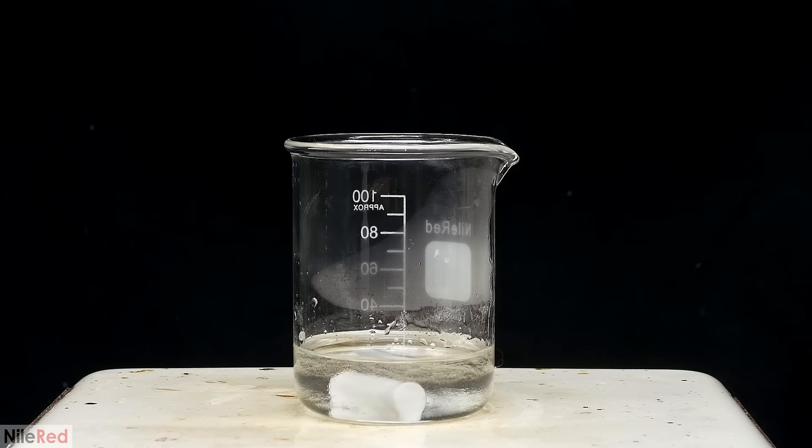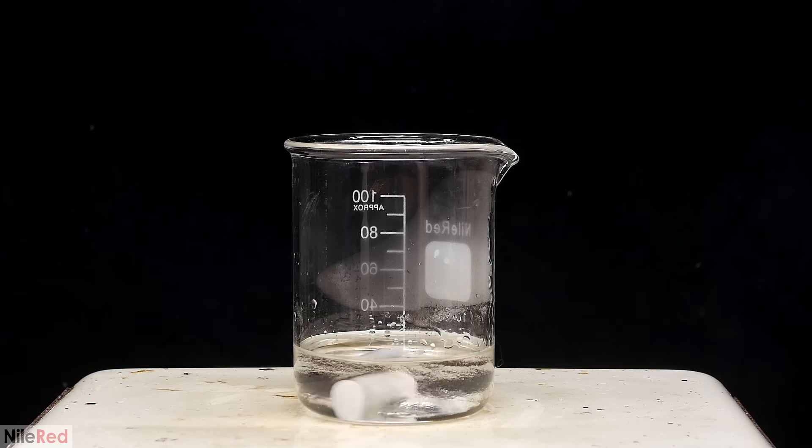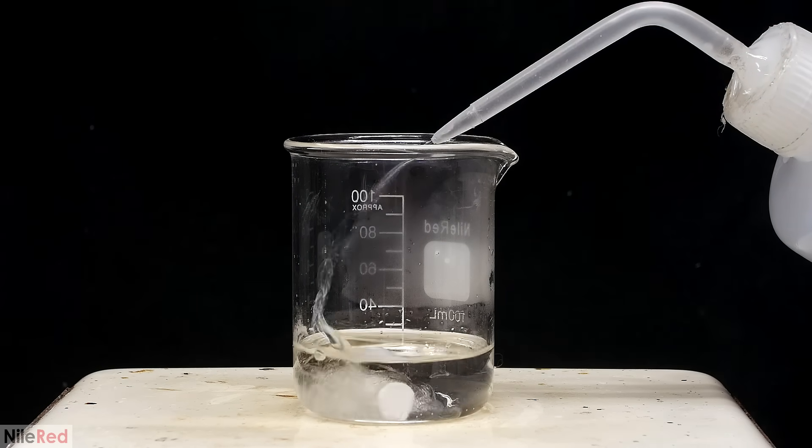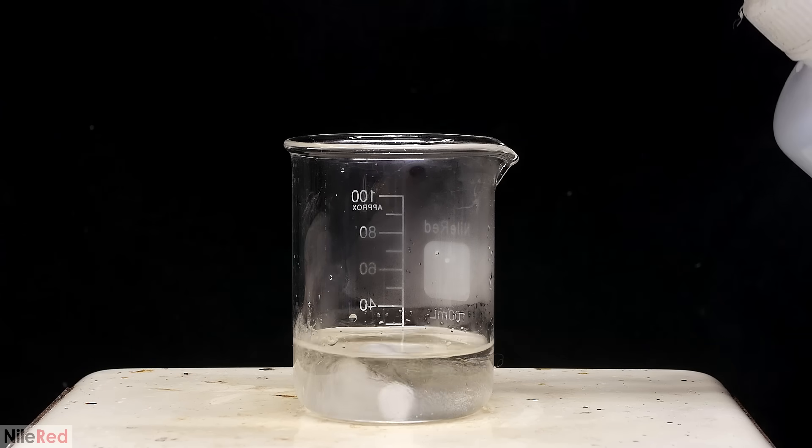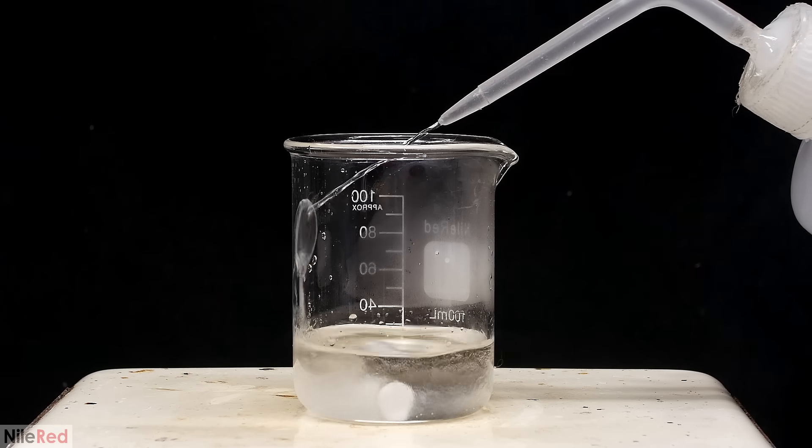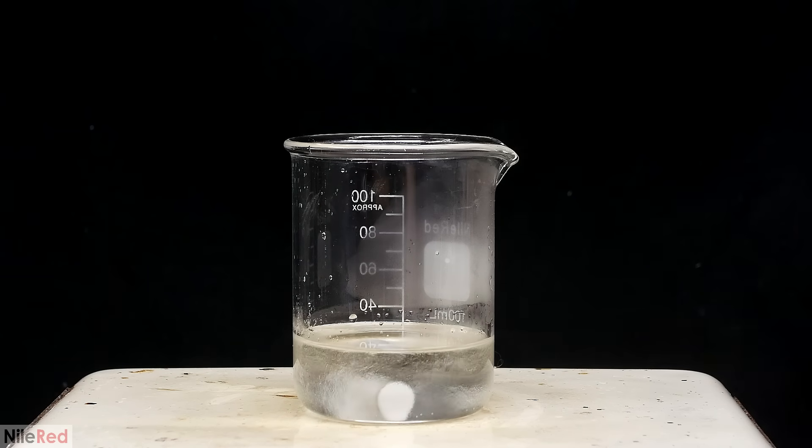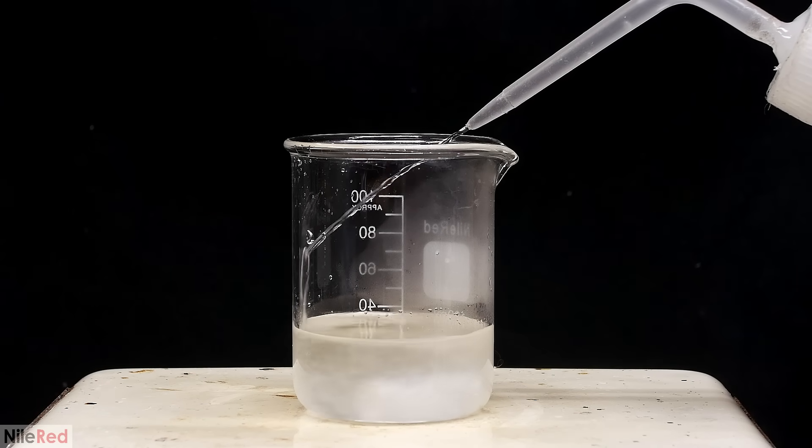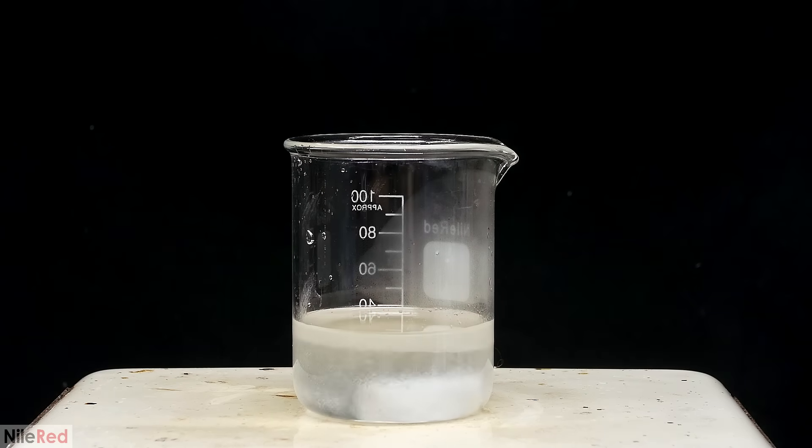The first thing that I need to do is dissolve all of the chlorobutanol in a minimal amount of boiling or near boiling ethanol. When everything is dissolved, I start adding water which will reduce the solubility. The basic idea is to find a balance where the chlorobutanol is just barely soluble in the hot mixture. This way, when the solution cools down, the solubility of the chlorobutanol will decrease, and it should crystallize out.